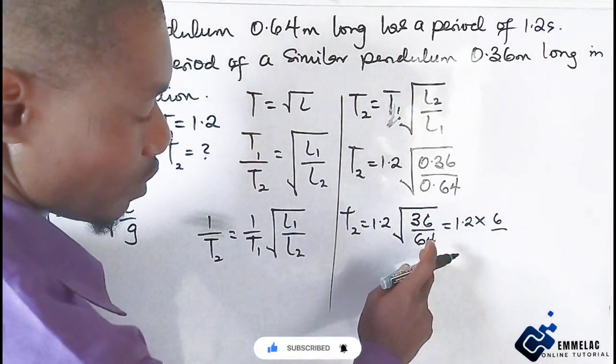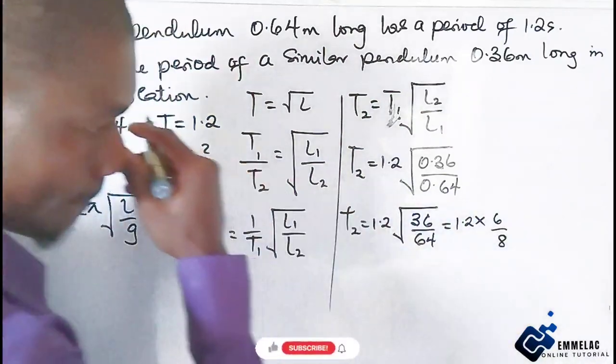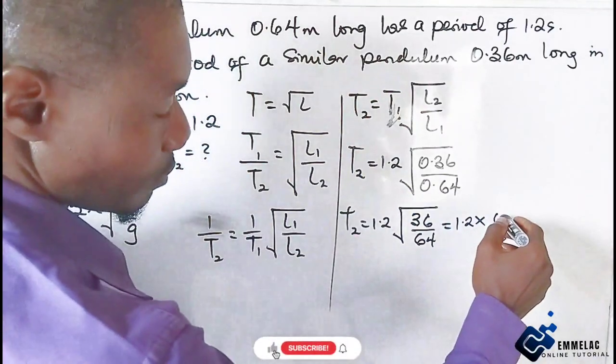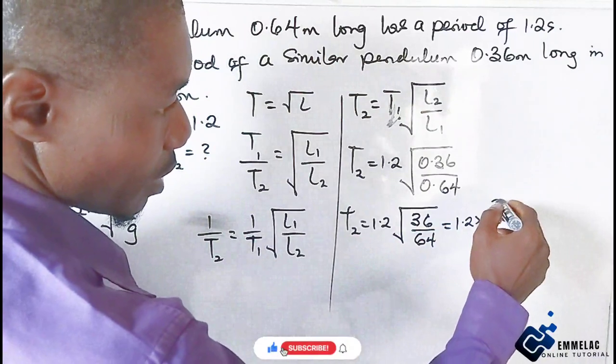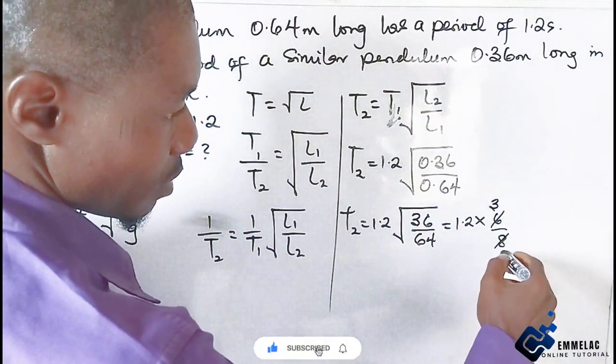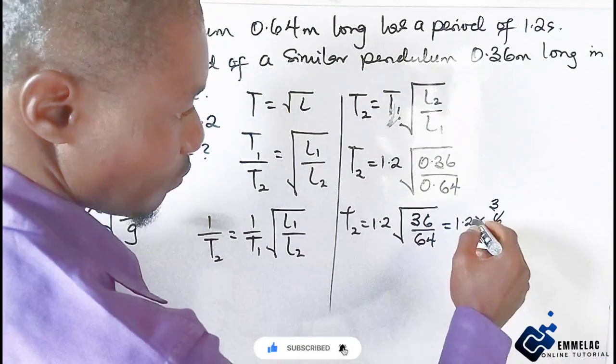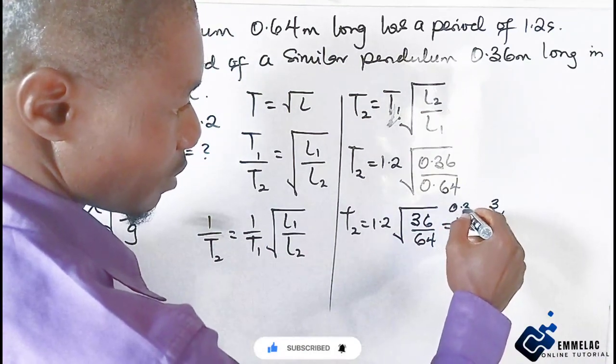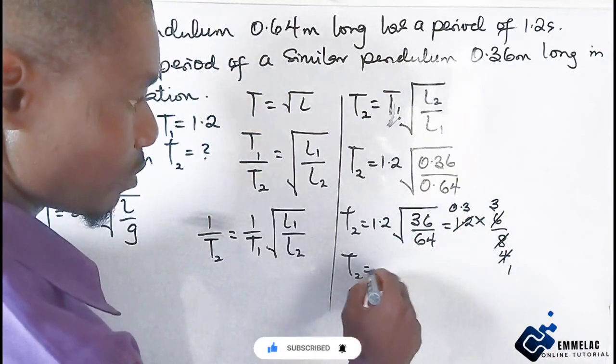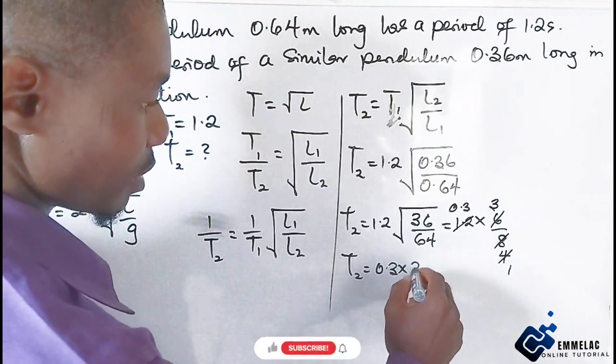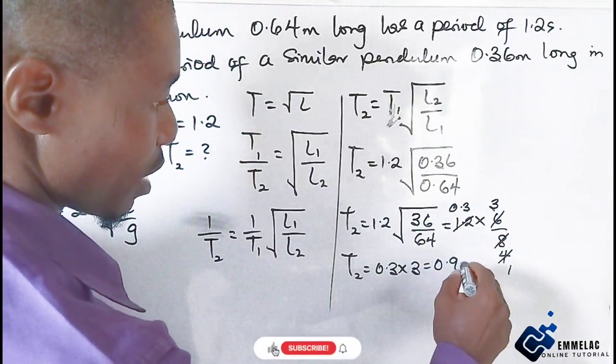Simplifying: 2 goes into 6 three times, 2 goes into 4 twice, 4 goes into 1.2 giving 0.3. So T2 equals 0.3 times 3, which gives us 0.9 seconds. Final answer.